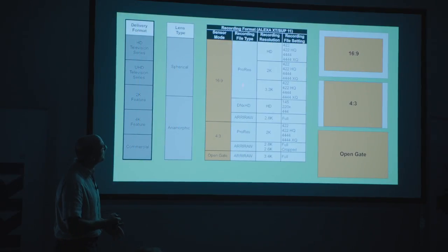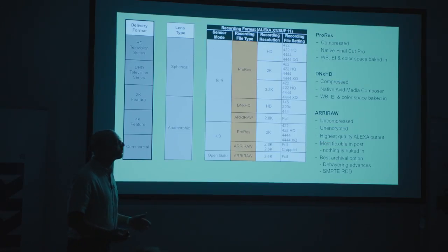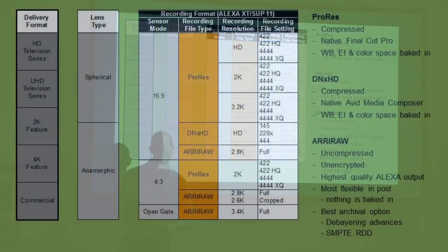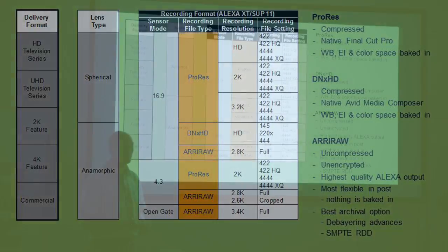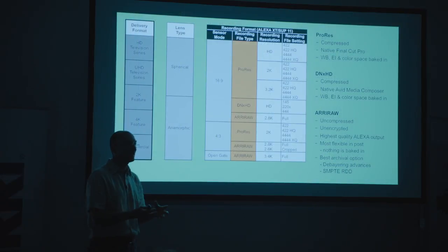The second element is the recording file type. First there's ProRes, probably the most popular recording format with the Alexa. ProRes is a compressed format designed by Apple — it's the native codec for Final Cut Pro. When we record ProRes, we debayer the image in the camera and bake in the white balance and exposure index, so those things are permanently in the image.